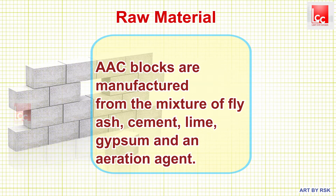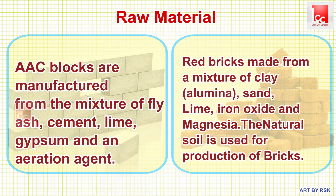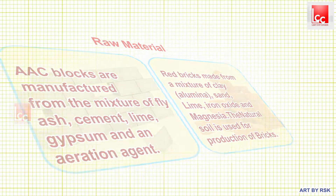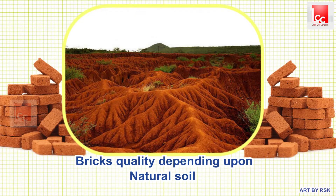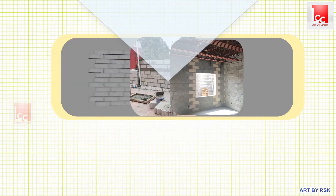Regarding raw materials, AAC blocks are manufactured from the mixture of fly ash, cement, lime, gypsum, and an aeration agent. Whereas conventional red bricks are made from the mixture of clay, alumina, sand, lime, iron oxide, and magnesia. The natural soil is used for the production of bricks, hence it will vary depending upon the quality of local soil, that is the topsoil of the earth's crust.